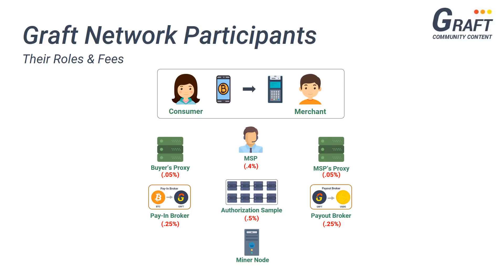Last but not least, we have the mining node, which is responsible for settling every transaction that occurs on the Graft network and writing them into the blockchain. The fees charged by the mining node are set by proxy supernode owners, which in most cases will be the merchant service provider. This fee allows the merchant service providers to prioritize transactions according to their business model and the merchant's needs. The minimum fee that can be set for a mining node is 0.1 Graft.